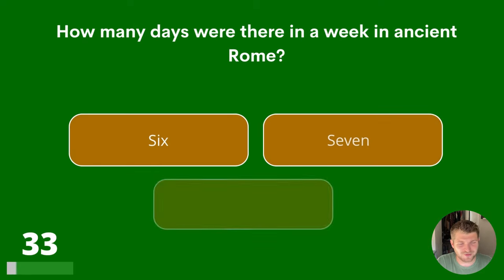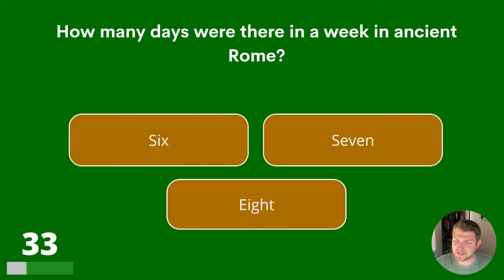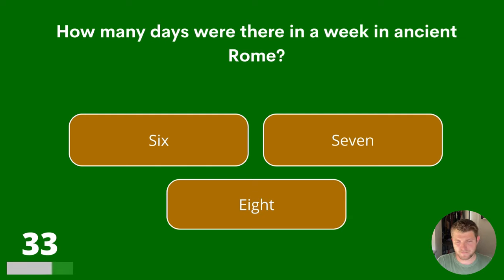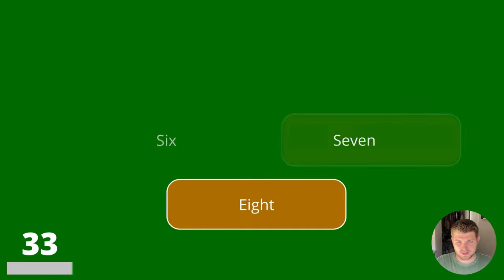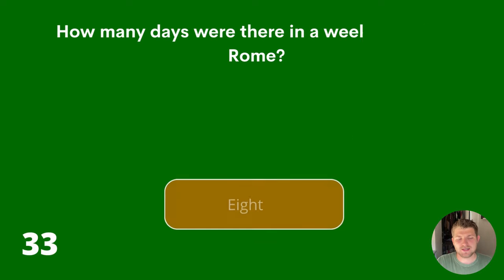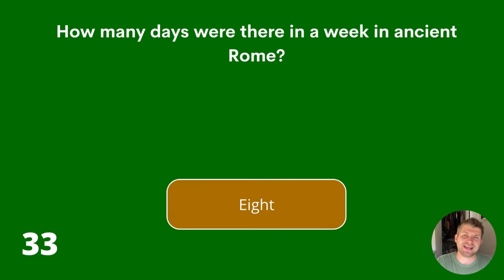Question 33. How many days were there in a week in ancient Rome? 6, 7 or 8? The answer is 8.